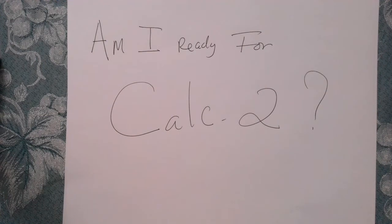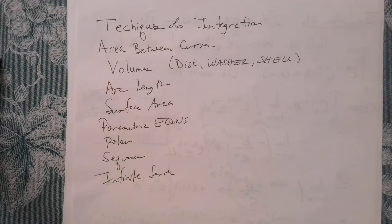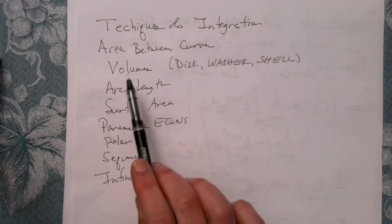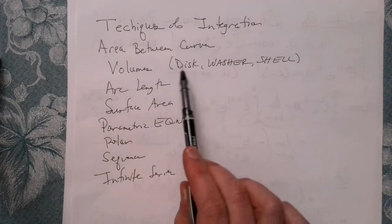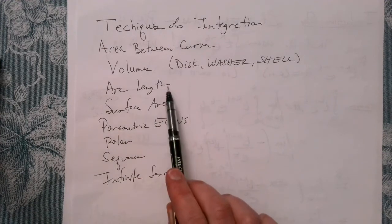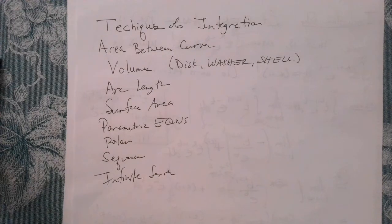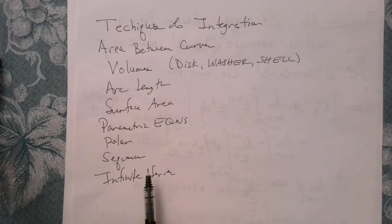Calculus 2 can vary from institution to institution. The version of Calculus 2 that I've taught dozens and dozens of times has the following topics: techniques of integration, area between curves, volumes of solids of revolution including these methods, arc length and surface area, parametric equations and curves defined parametrically with corresponding calculus ideas, polar coordinates, sequences, and infinite series. It's tough stuff.